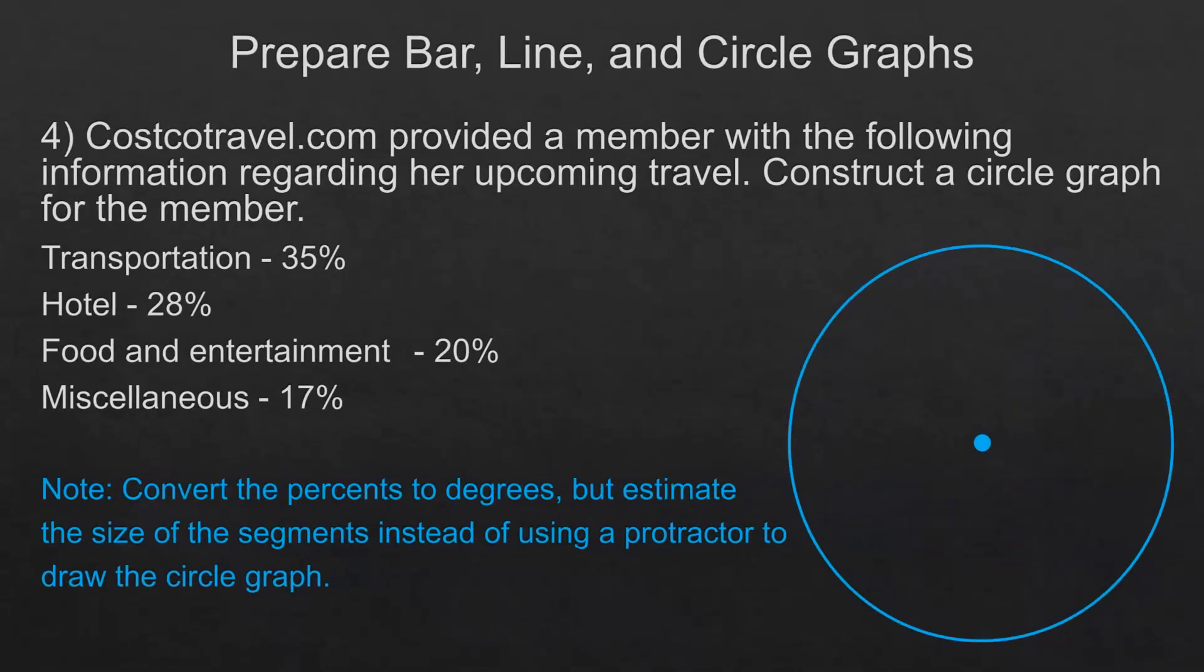We are going to take this and make a circle graph. We're going to take the percent in decimal form times 360. You can draw the line graph without doing the number of degrees. To be real accurate you would use a protractor but we're really not going to get into being that drastic. So we get 126 degrees for this one, 0.28 times 360 is 100.8 degrees, 0.2 times 360 is 72 degrees, and 0.17 times 360 is 61.2 degrees.